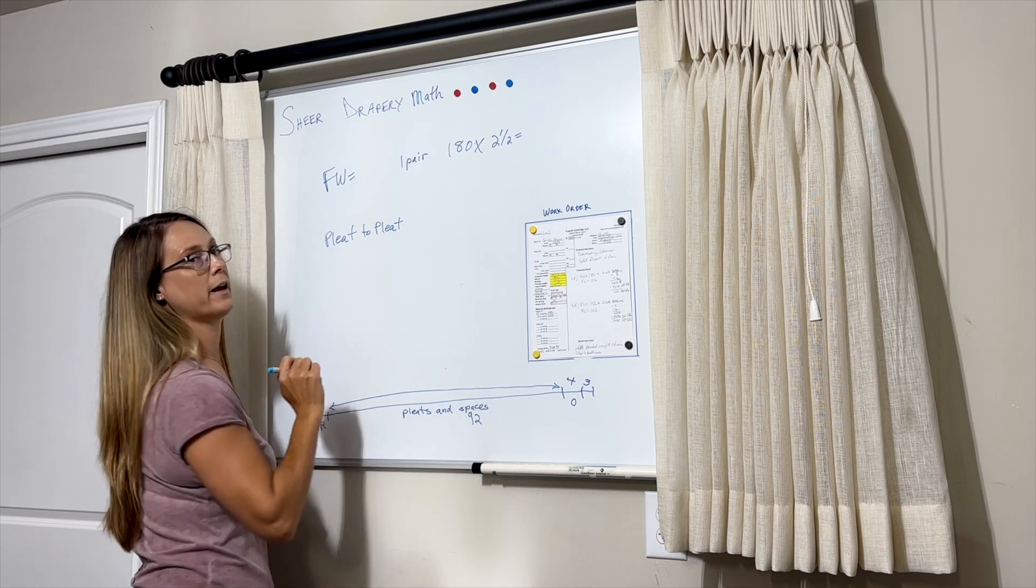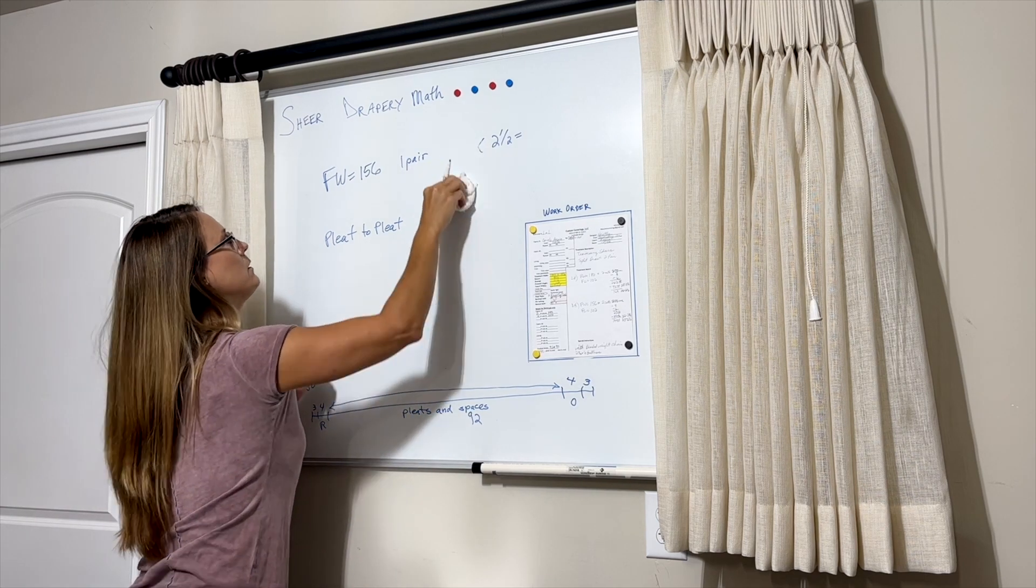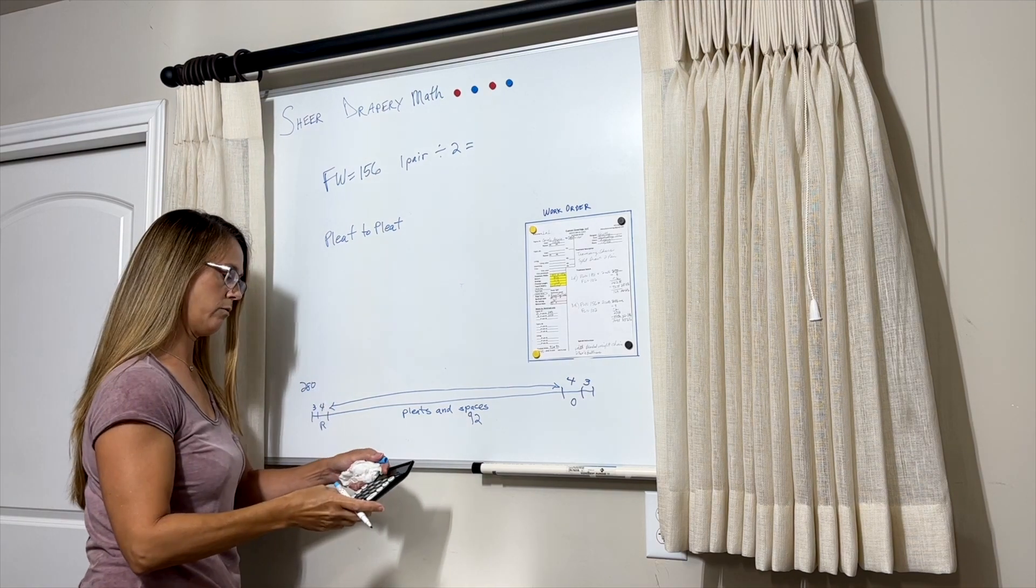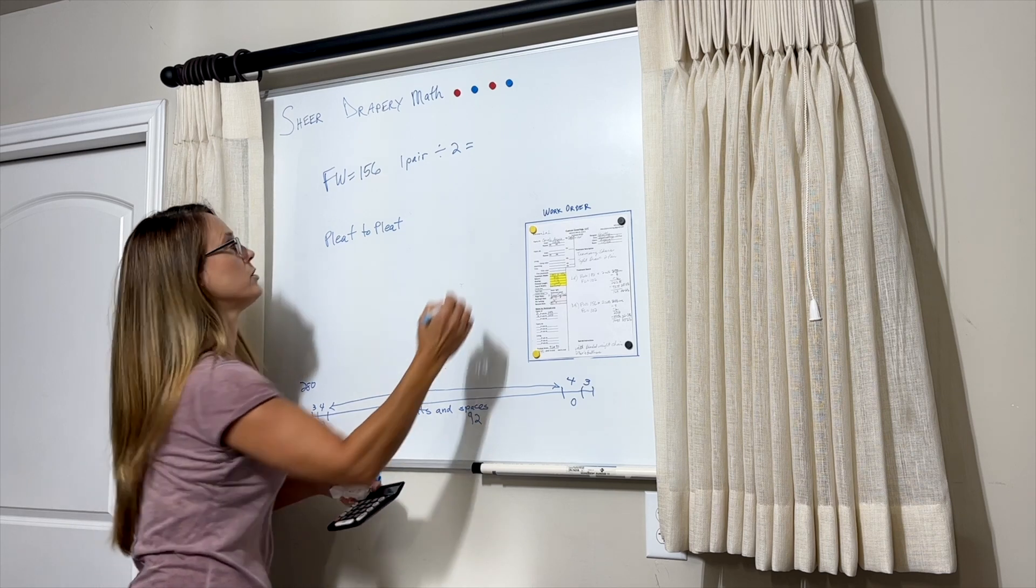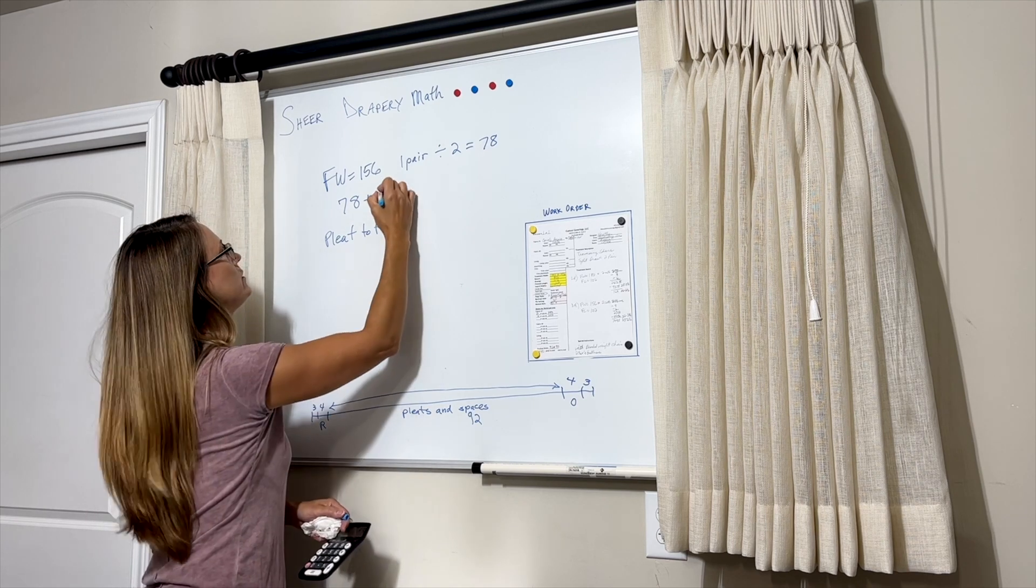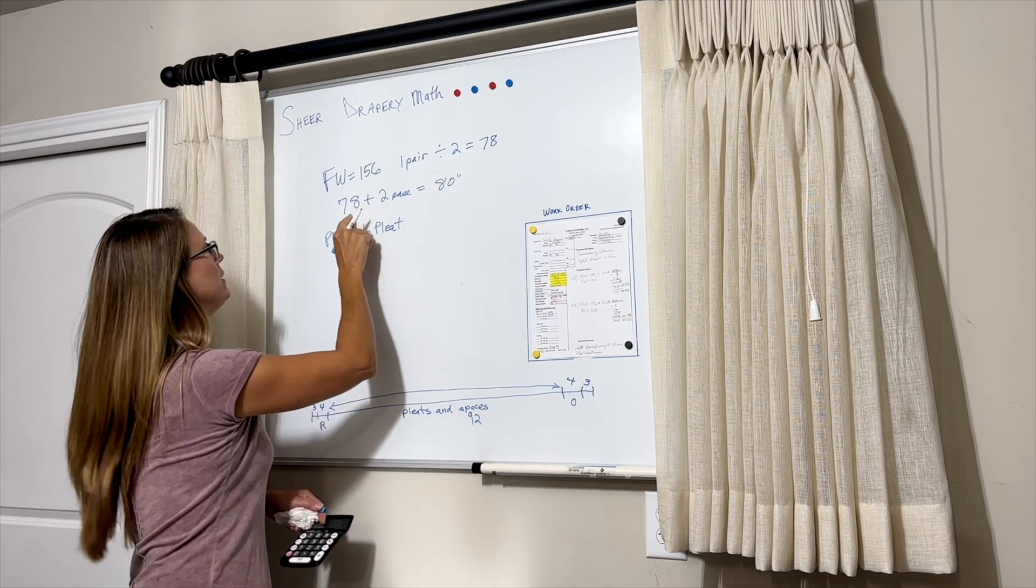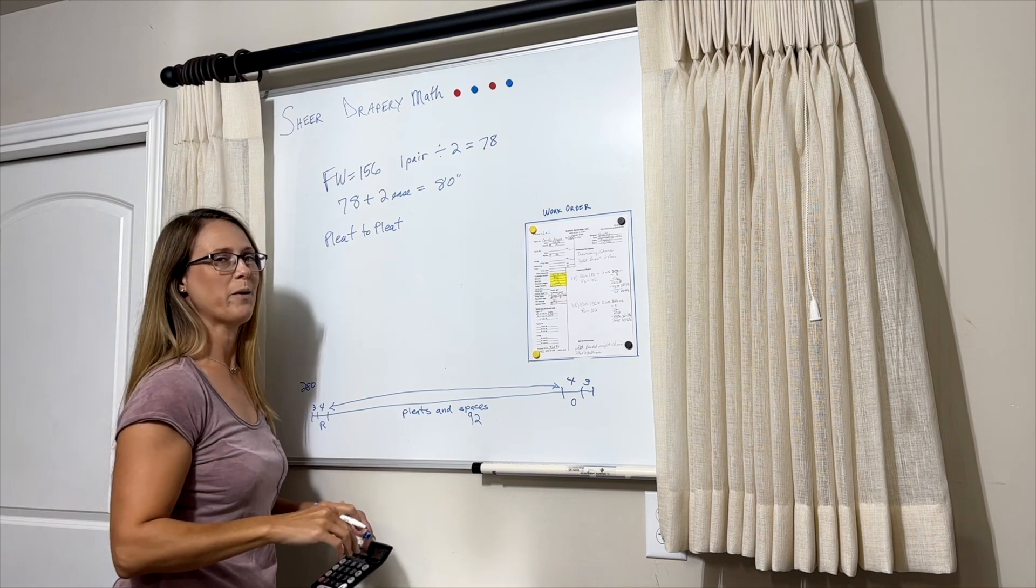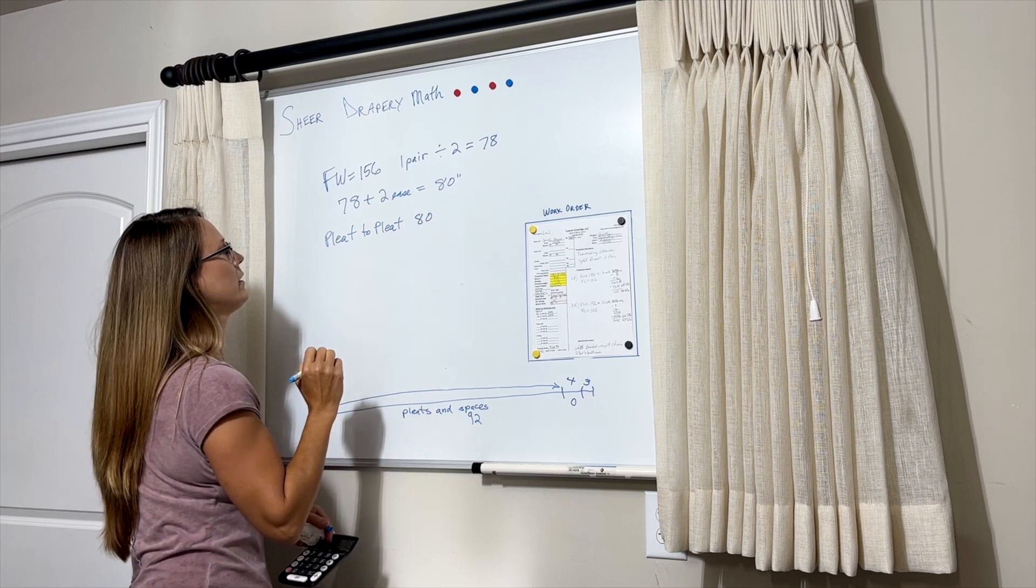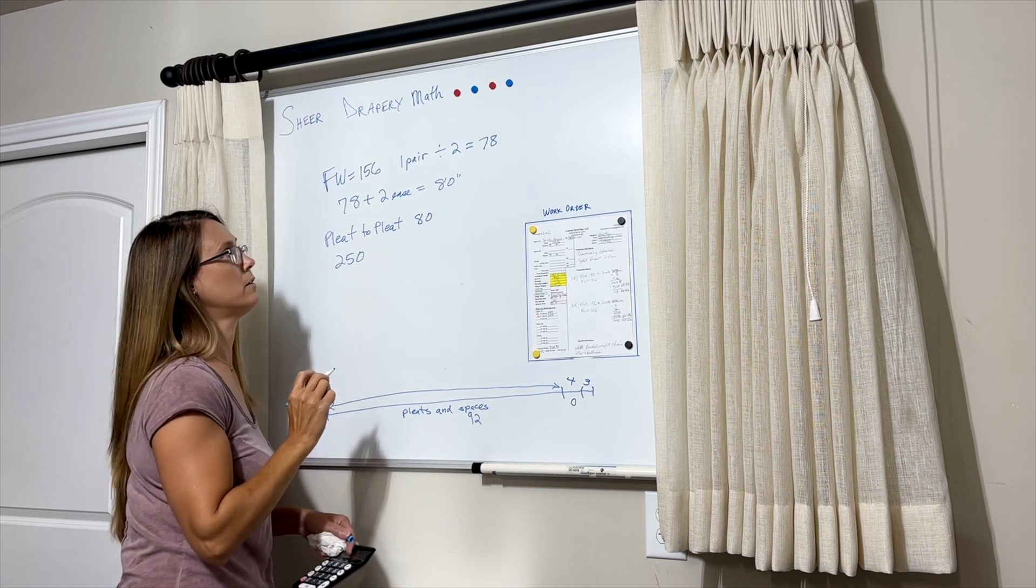Okay, so we have finish width at 156. That's for the pair. So then we'll divide that by two so we know what each panel needs to be to fit the rod. 156 divided by two is 78. So then remember, we like to add two inches of ease, so 78 plus two inches for ease equals 80. Sometimes I use the calculator for even that simple of a math problem, but I got that one. So our pleat-to-pleat is going to be 80, and we cut 250 inches of fabric for each panel for this pair.